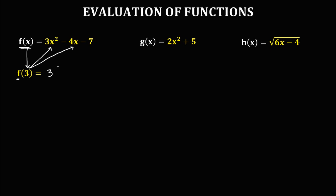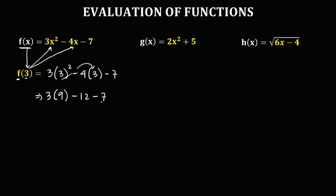So we have now 3 times 3 to the power 2, because x is equal to 3, then minus 4 times 3, then minus 7. Simplifying: 3 squared is 3 times 3, that's 9, and negative 4 times 3 is negative 12, then minus 7. So we have 3 times 9, that's 27, minus 12, minus 7.